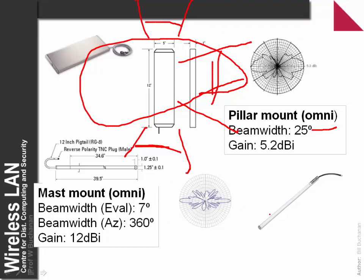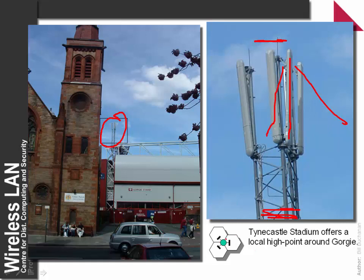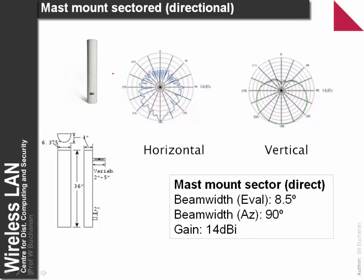With a mast-mounted high-gain version, we get a very thin beam but good coverage around it. Because it's concentrated within 7 degrees, we get a fairly high 12 dBi. This shows an example of mast-mounted antennas on a football stadium — each one covering a different segment. These mast-mounted antennas have only 8.5 degrees in elevation, which is a fairly thin region, but a beam width of 90 degrees in azimuth, allowing coverage of different segments. With only 8.5 degrees in elevation, the gain is 14 dBi.